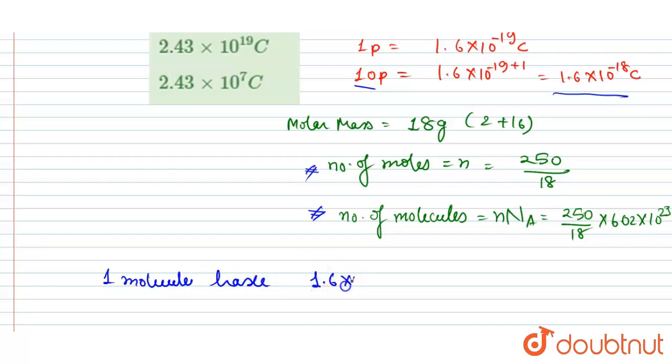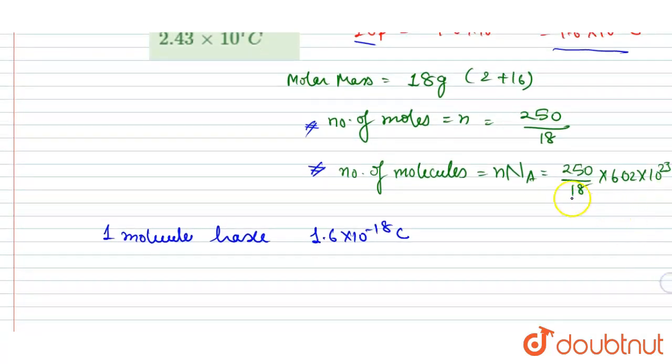Now we have this many molecules, so just multiply it. I will write (250/18) × 6.02 × 10^23 × 1.6 × 10^-18. This will be the total positive charge.